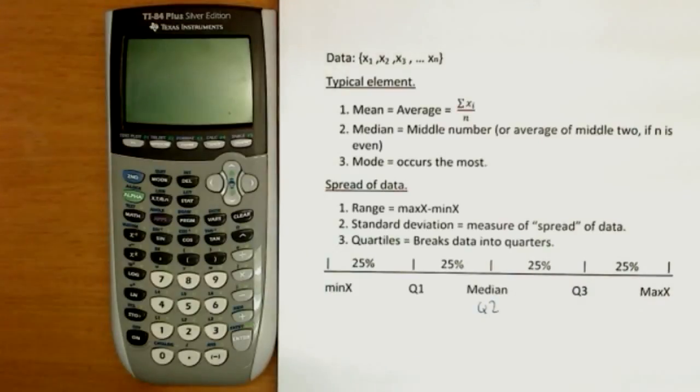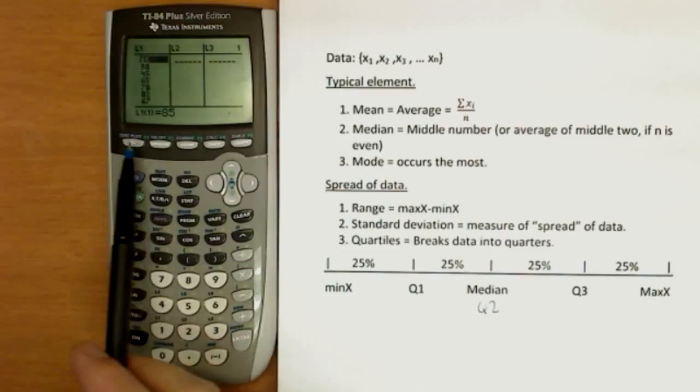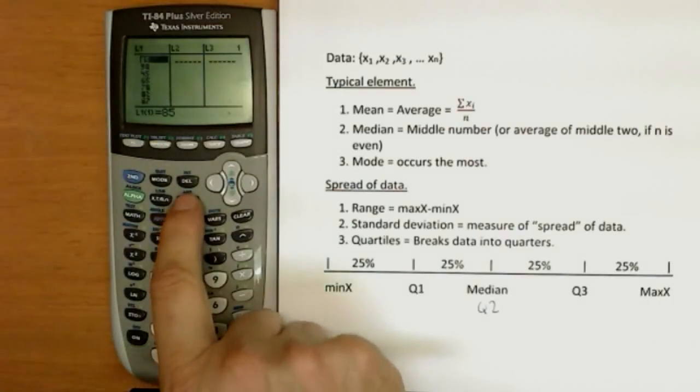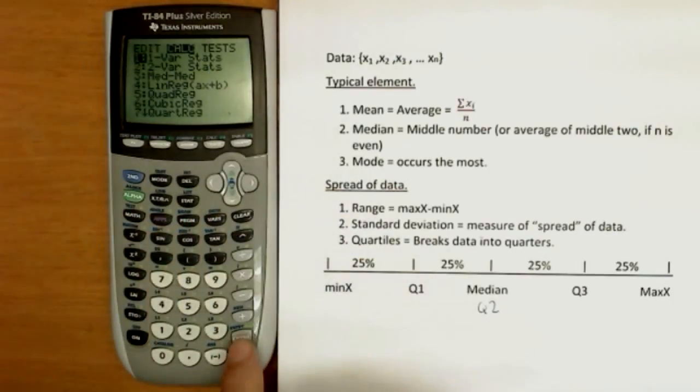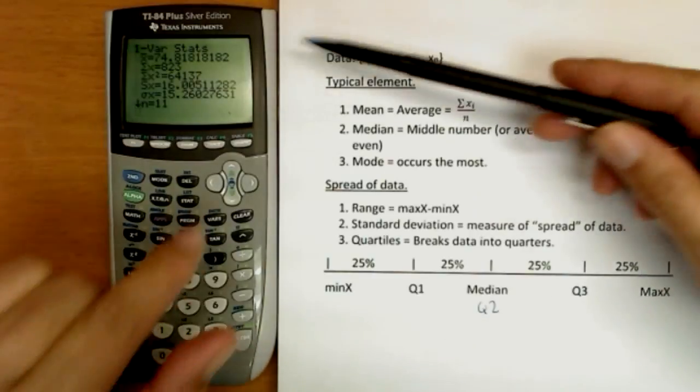Now, how we do this on the calculator is the following. To put the data in, you'll do stats, edit. When you type them into the L1 list or L2 or any other list you want, I've already typed the data into L1. Then, when we want to do the calculation, we'll use stat, calculate. And we'll select one variable statistics, which is the first one. When you run that, it's going to put out all of these answers for the set of data.